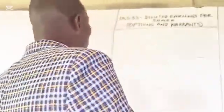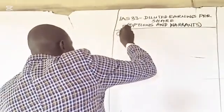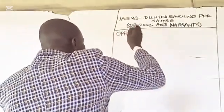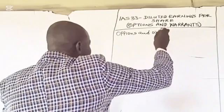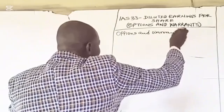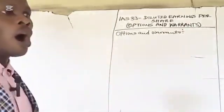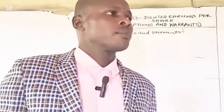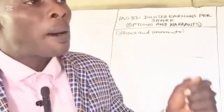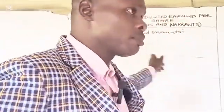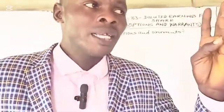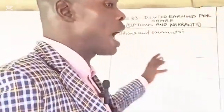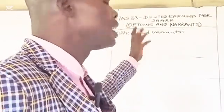So what are options and warrants? Options, or share options and warrants, are contracts issued by a company which allow the holder of the option to buy shares of the company at some time in the future at a pre-agreed price.